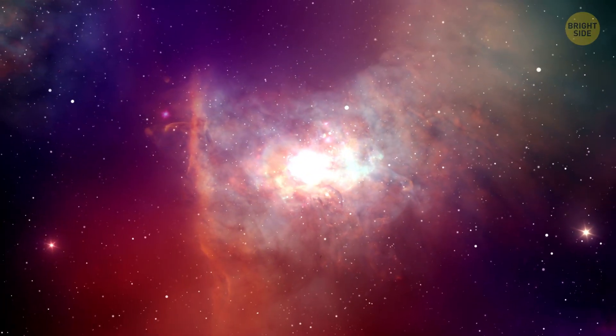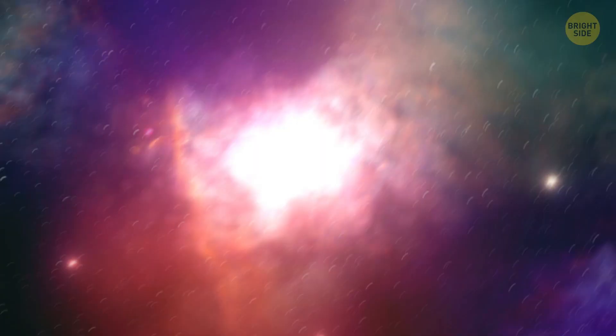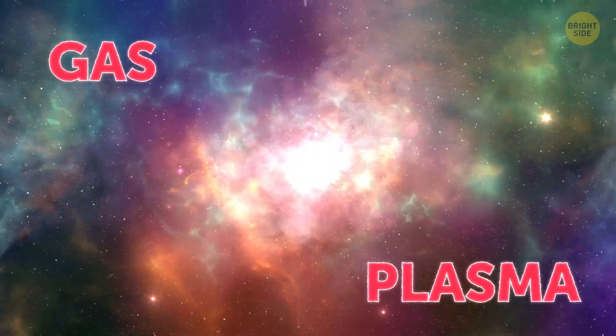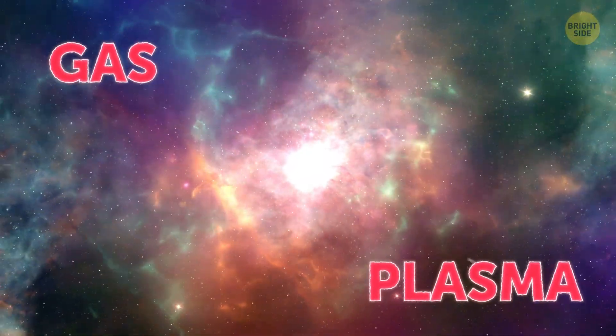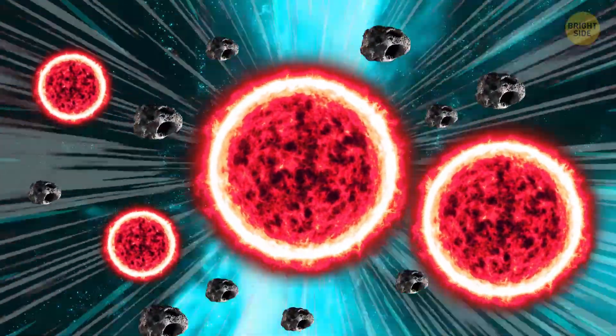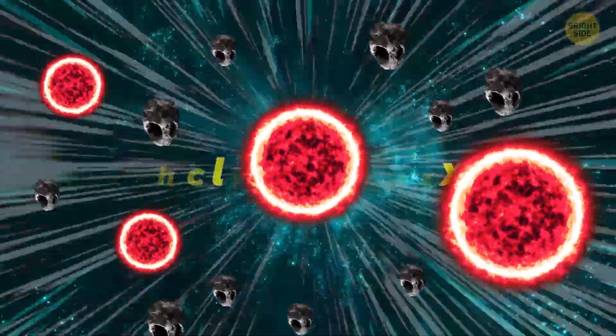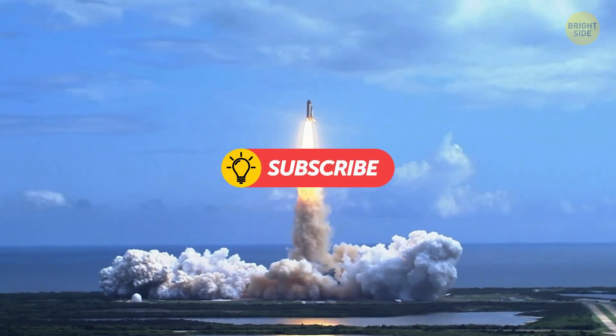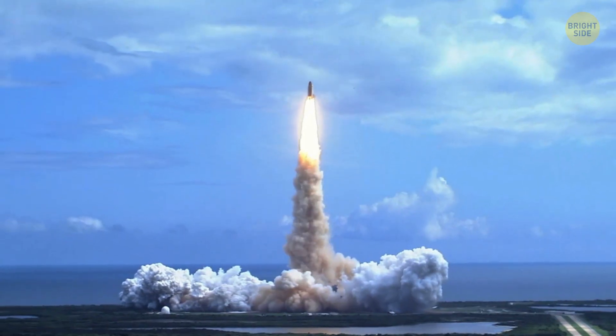When a star goes supernova, it doesn't always explode evenly. These lopsided detonations not only expel a few dozen suns' worth of gas and plasma, but also hurl what remains of the star through the cosmos at almost half the speed of light. Considering humans have only been able to propel an object at a fraction of that, it looks like Mother Nature has us beat.